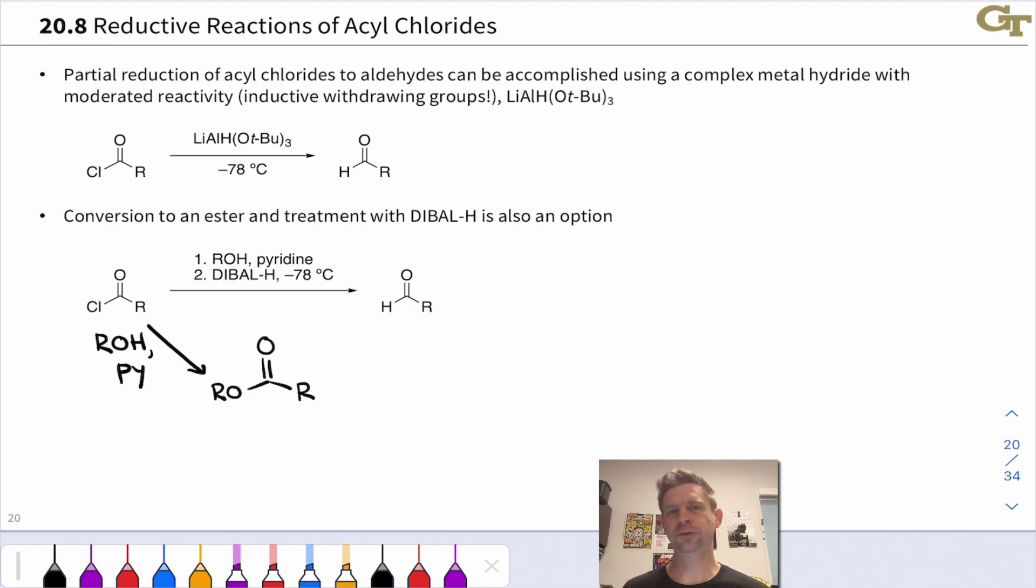If we want to reduce the acyl chloride not all the way down to a primary alcohol but to an aldehyde, that's possible using a complex metal hydride reagent that is less reactive than lithium aluminum hydride. And the one of choice is lithium aluminum tri-tert-butoxy hydride, where three O-tBu groups, three tert-butoxy groups, replace three of the hydrogens in lithium aluminum hydride. This achieves partial reduction to the aldehyde.